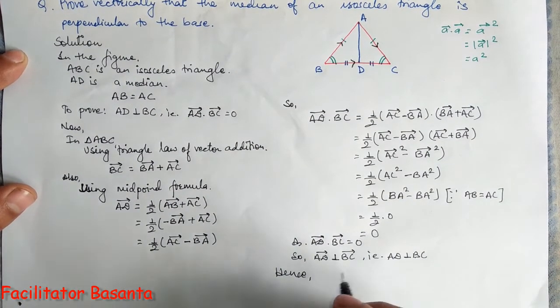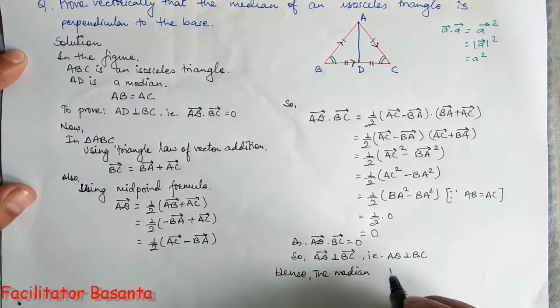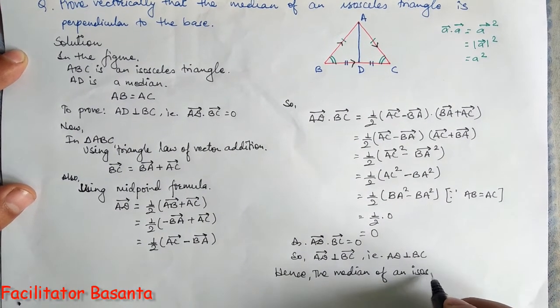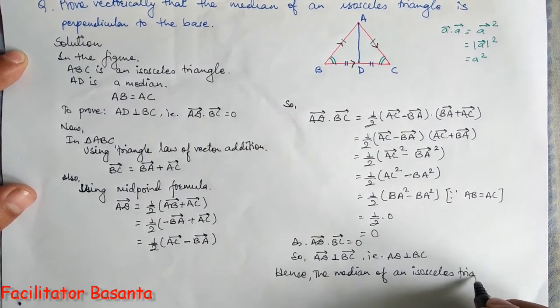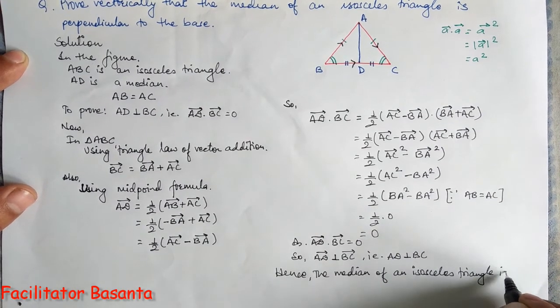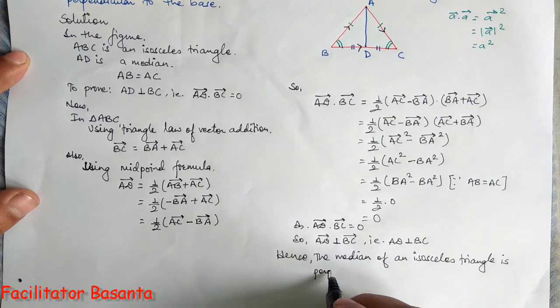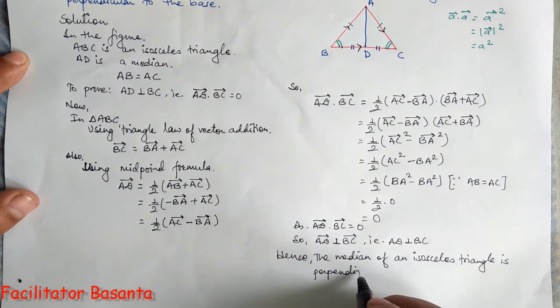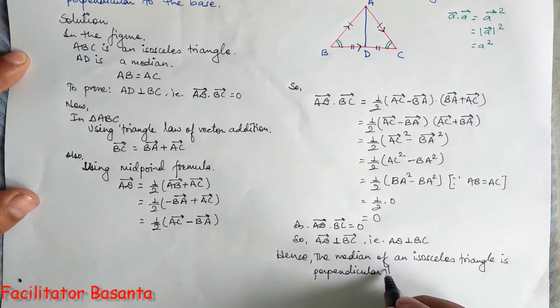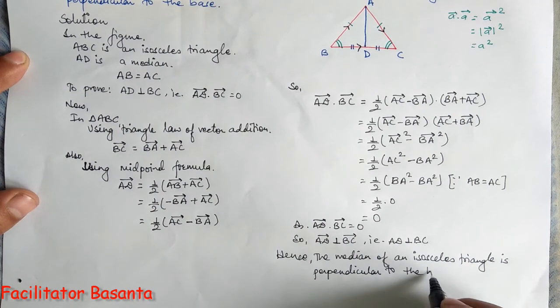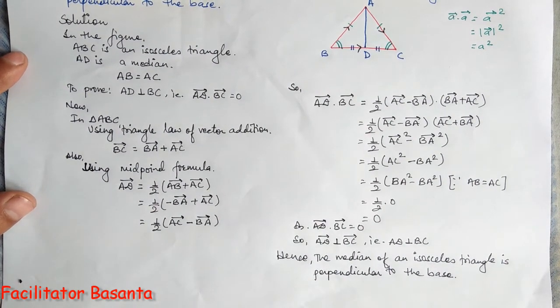Hence, the median of an isosceles triangle is perpendicular to the base.